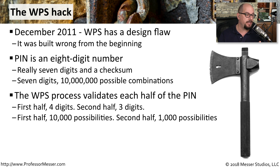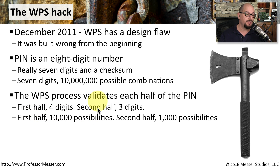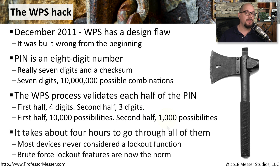With only four digits, you have 10,000 possibilities, and the second number was really three digits and a checksum — so those three digits gave only 1,000 different possibilities. This meant that you only really needed to go through 11,000 possibilities, making it very easy to brute force access to a WPS-enabled wireless network.